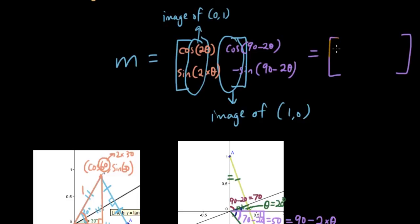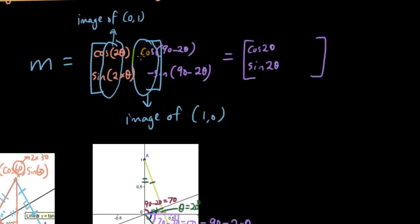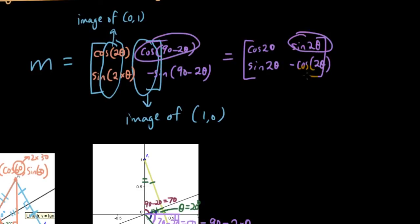So writing that out more clearly: if you have learnt about complementary angles in trigonometry, cos(90 minus 2θ) is the same as sin(2θ), and negative sin(90 minus 2θ) is the same as negative cos(2θ). If you don't know why, look up complementary angles in trigonometry. Thanks for watching guys, see you next time.